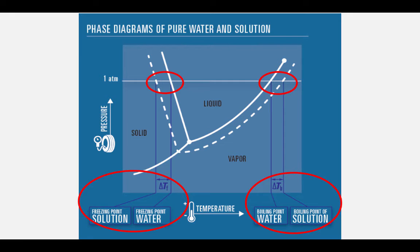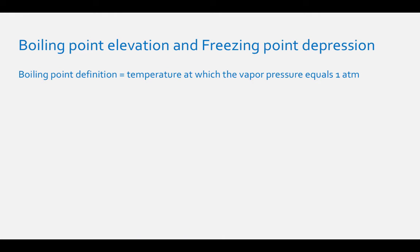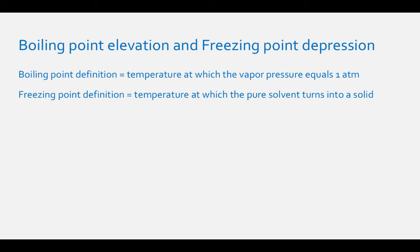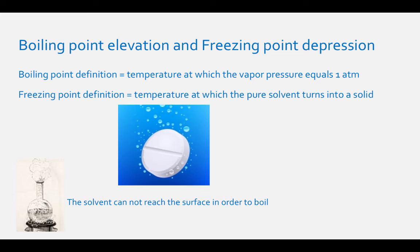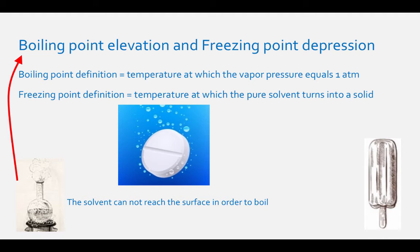But why is this? The definition of boiling point is the temperature at which vapor pressure equals one atmosphere. The freezing point of the solution occurs when the pure solvent turns into a solid. When solute particles are added to a solvent, they get in the way of the solvent particles. In the case of boiling point, the solute particles prevent the solvent from reaching the surface to boil, so a higher temperature is needed for the vapor pressure to reach surrounding pressure, and the boiling point is elevated. In the case of freezing point, the solute particles get in the way again, making it more difficult for solvent particles to form ice, and the freezing point is depressed.